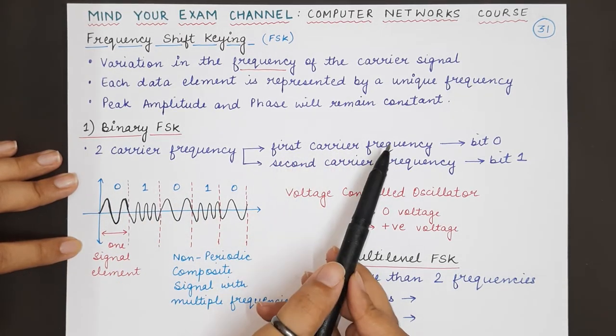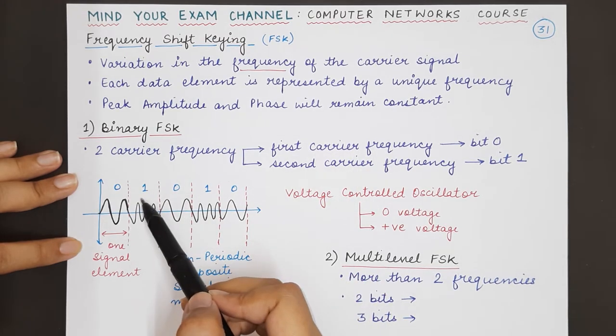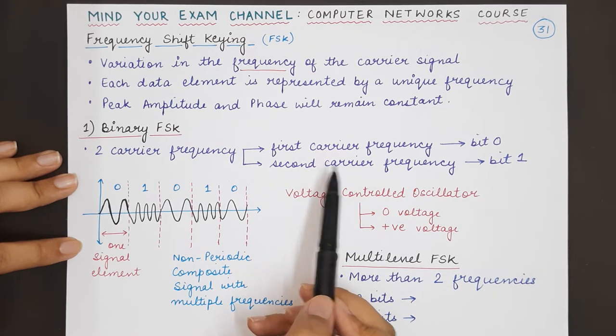Whenever you are representing zeros, you will use the frequency of the first carrier, and in case of bit 1, you will be using the frequency of the second carrier wave.